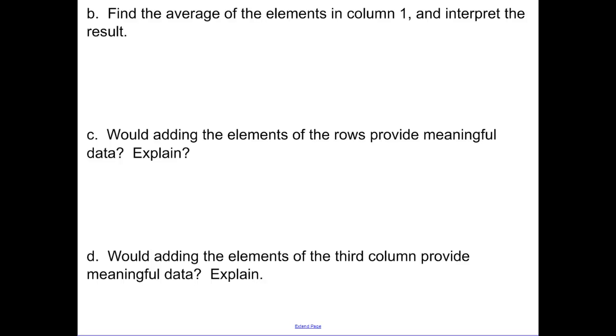Find the average of the elements in column one. So column one was our tuition column of our three universities. So remember, average is you take all of the elements, you add them together, and you divide by three. So when I do that, we get $5,953, and interpret the results.